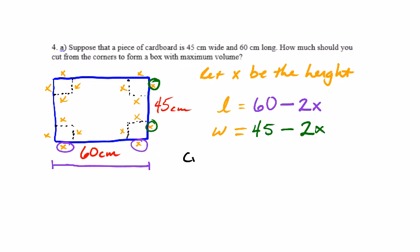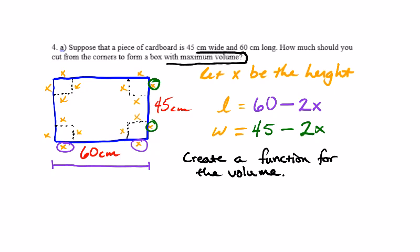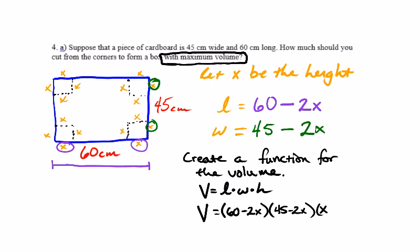We're going to create a function for the volume. The reason we want to do this is because we want to create a maximum volume. You could pick any x value that fits the situation, but it may not give you the maximum volume. By creating a function, it allows us to see all the possible volumes and then find the biggest one. So the volume is V equals (60 minus 2x) times (45 minus 2x) times x. There's our polynomial. We're not going to multiply that out.